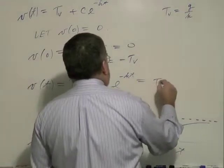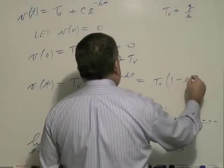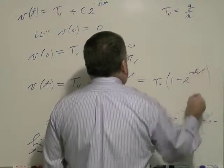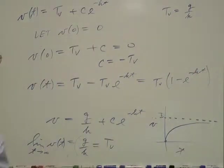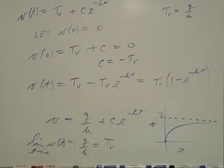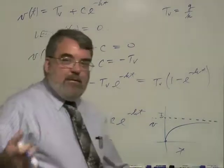So now we can replace that up there and we have velocity. We have terminal velocity minus terminal velocity e to the negative kt. And if we prefer, we can factor this out, one minus e to the negative kt.